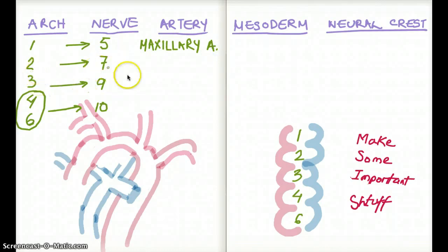Brachial arch 2 gives rise to S or stapedial artery. That's brachial arch 2. Brachial arch 3 gives rise to ICA or internal carotid artery.